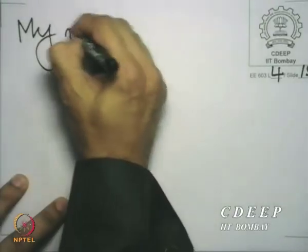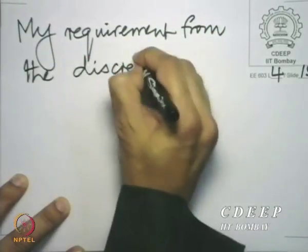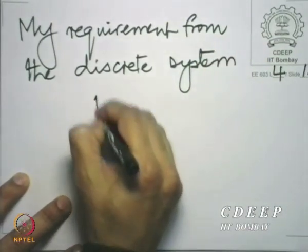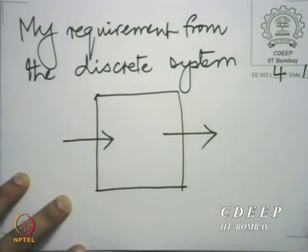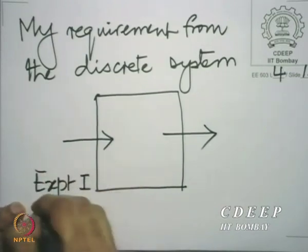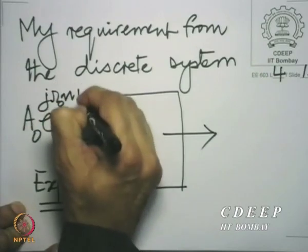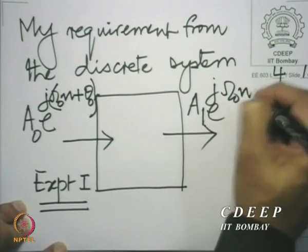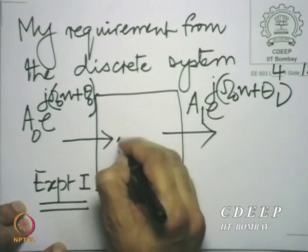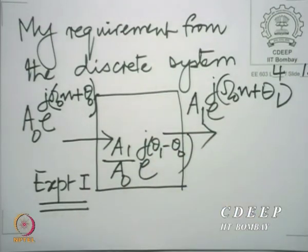My requirement from the systems that I design: let me do three experiments. Experiment one — I put in a phasor with frequency omega_0 and initial phase theta_0. Out comes a phasor a_1·e^(j·omega_0·n + theta_1). Therefore, the system can be described by just the ratio (a_1/a_0)·e^(j·(theta_1 − theta_0)). I can describe the system just by this multiplication at that frequency.